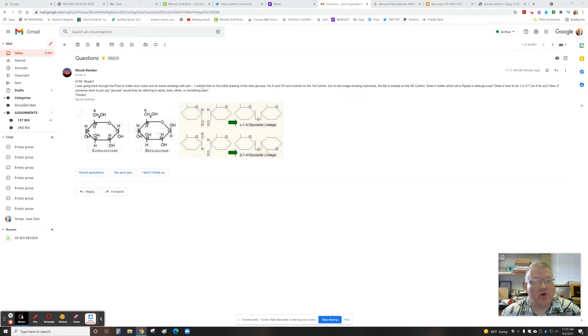I noticed that on the initial drawing of the beta-glucose, the hydrogen and hydroxyl groups are inverted on the first carbon, or the image showing hydrolysis that flips instead of the fourth carbon. Let's take a look.